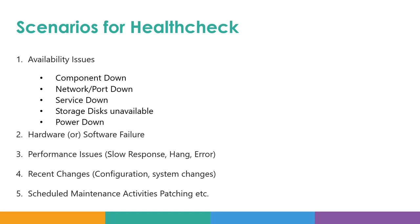Apart from the daily health check, the first scenario is whenever you have availability issues like a compute instance or a storage server being offline, or it is untraceable due to network or port down. Sometimes services like an OIS service or a database service can go down, and then storage disks can go offline where they are not accessible, and you might have a power down scenario at the data center.